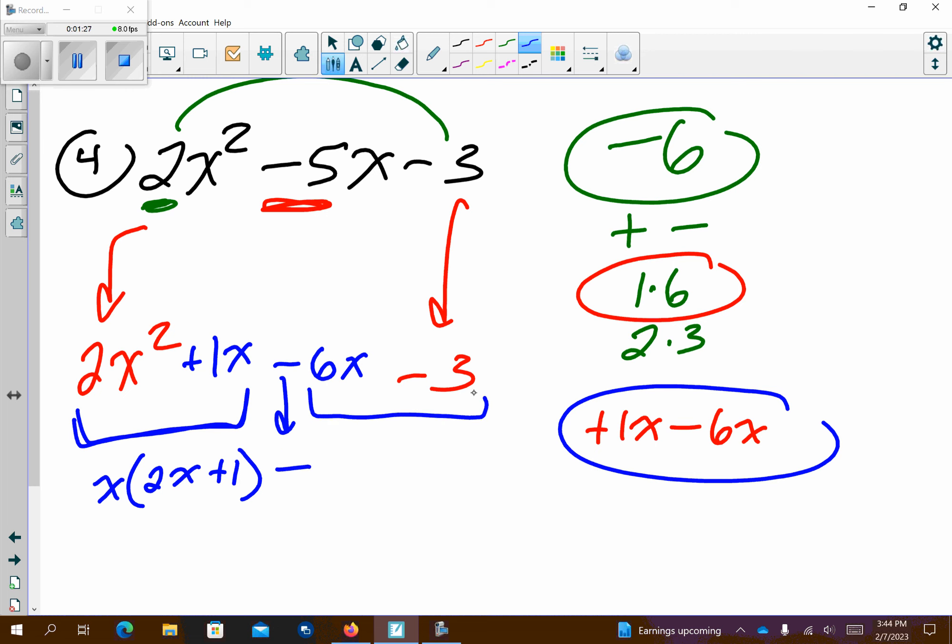I'm factoring a negative out, so signs are going to change. So if I factor, what does 6 and 3, 6x and 3 have in common? So I'm factoring a negative 3 out. If I factor negative 3 out, that becomes a positive 2x. Now, we can double-check it. Negative 3 times 2x is negative 6. Then negative 3 times what gives me negative 3, and that should be positive 1. Notice those are the same, and there's our answer. Now, if you had that backwards, if you had x minus 3 and 2x plus 1, your answer is still correct.